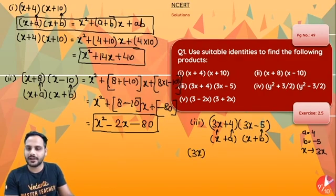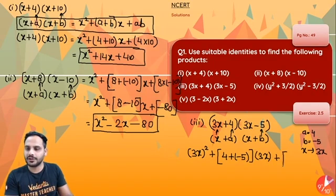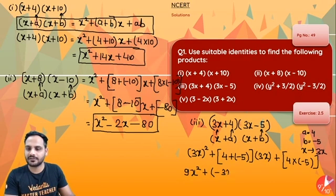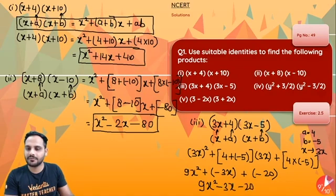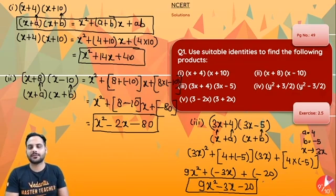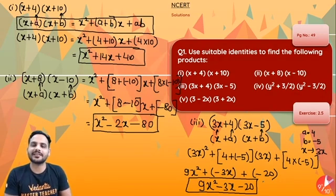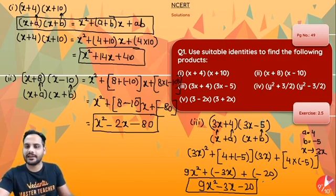So it will become 3x whole square plus 4 plus minus 5 into 3x plus 4 into minus 5. So 3x whole square is 9x square, 4 and minus 5 will give you minus 1, minus 1 into 3x is minus 3x, and 4 into minus 5 is minus 20. So finally 9x square minus 3x minus 20 is your correct answer.